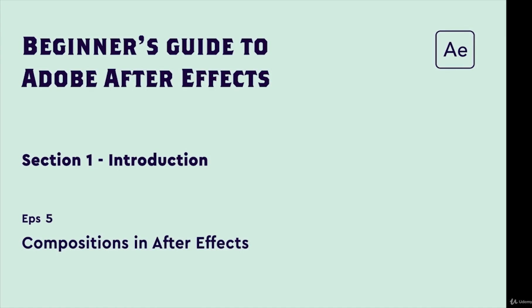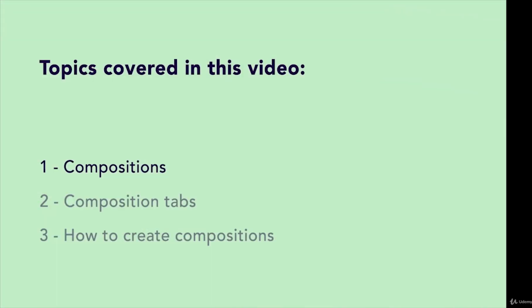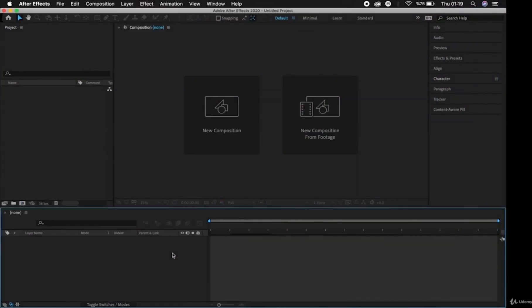Hello and welcome to the fifth video in this beginner's guide to Adobe After Effects. In this tutorial I'm going to discuss composition in After Effects. In the previous episode we talked about the timeline panel and how layers work. In After Effects, all the layers we see in the timeline panel are contained in what's called a composition. In this video we'll be covering: what are compositions, composition tabs, and how to create compositions.